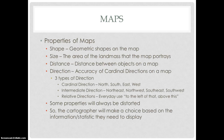The properties of maps are: shape, which is the geometric shapes on the map; size, which is the area of the landmass that the map portrays; distance, which is the distance between objects on a map; and direction, which is the accuracy of cardinal directions on a map. There are three types of direction: cardinal direction, which is north, south, east, and west; intermediate direction, which is northeast, northwest, southeast, and southwest; and relative direction, which is everyday use direction, such as 'this is to the left of that' or 'this is above that.'